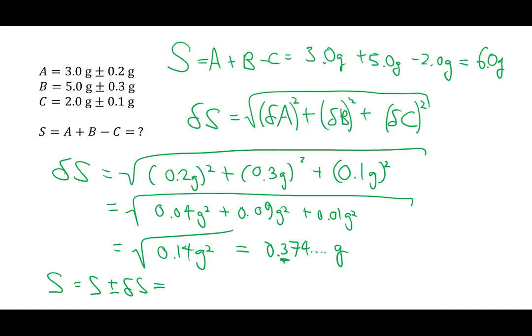Which we keep as a convention, one uncertain digit, which is therefore rounded up to the first decimal place. And so the value of S is going to be quoted to one decimal place as well, matching our uncertainty with 6.0 grams. And there you have it.